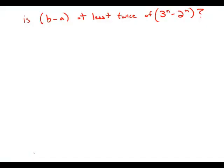If n is a positive integer, is the value of b minus a at least twice the value of 3 to the n minus 2 to the n?